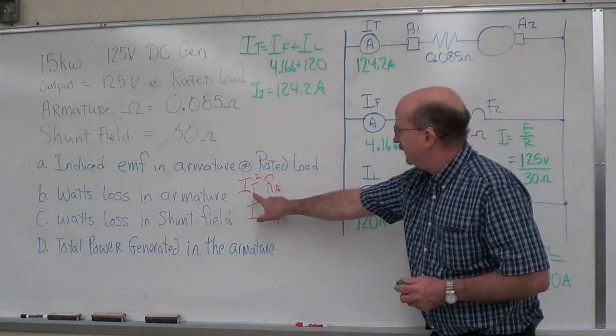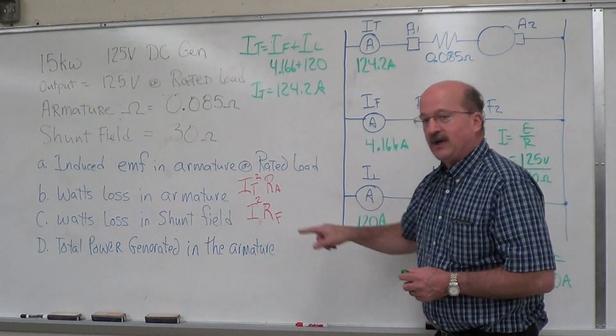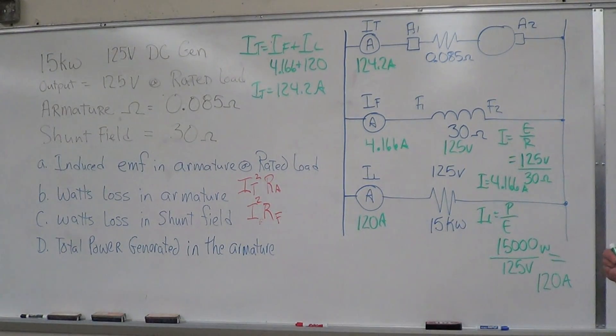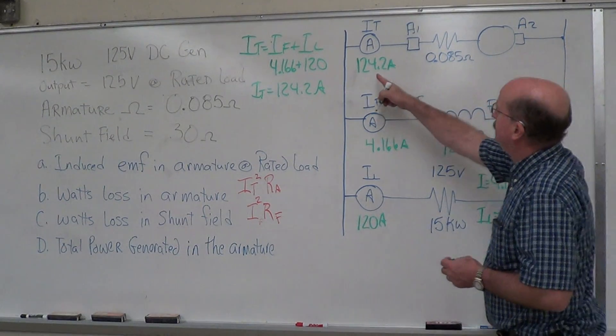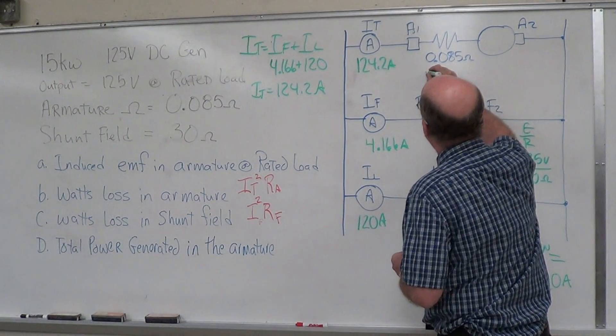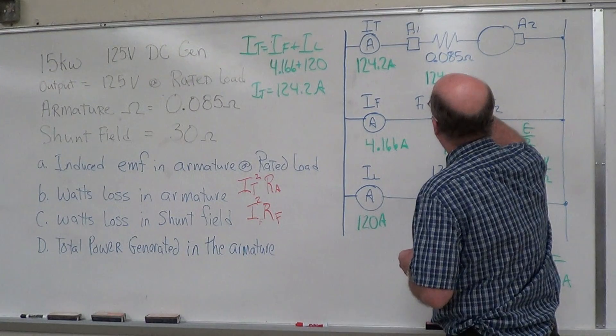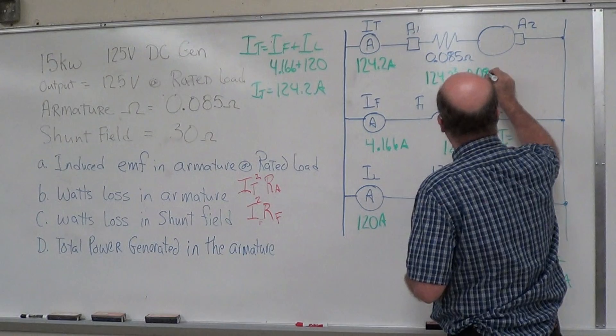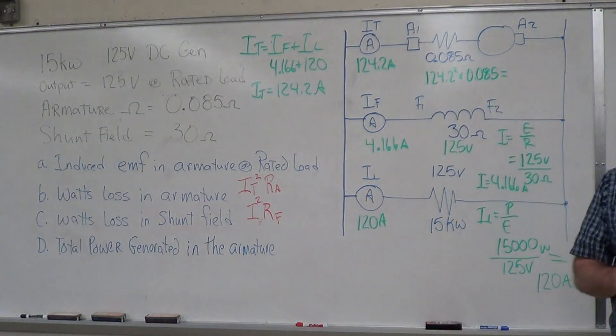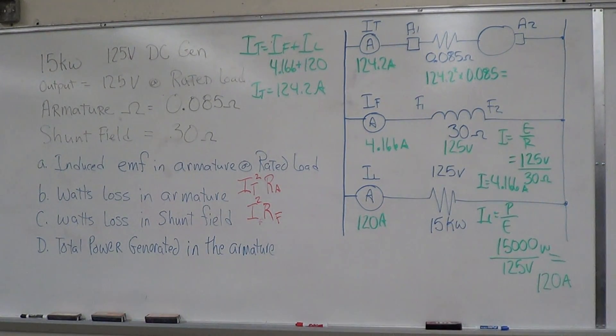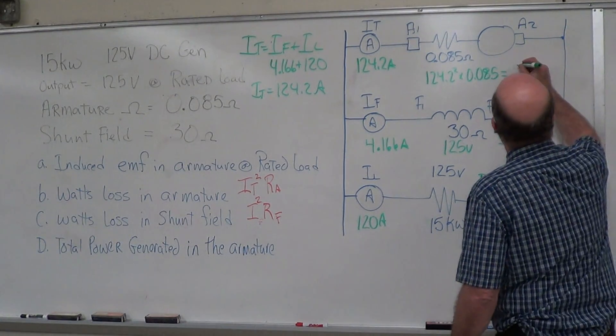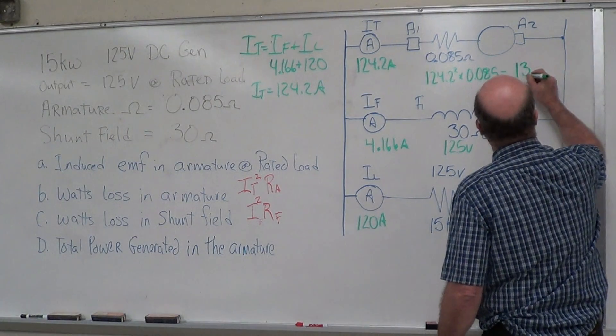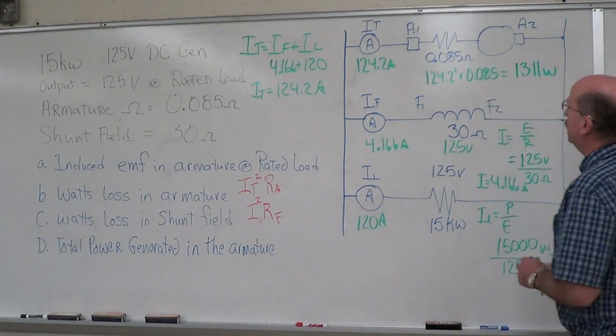We need to calculate IT squared times RA. That's going to give us our watts loss in the armature. IT is 124.2 squared times 0.085, which equals 1,311 watts.